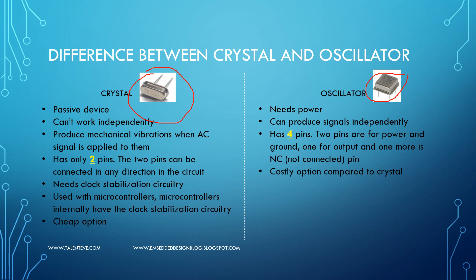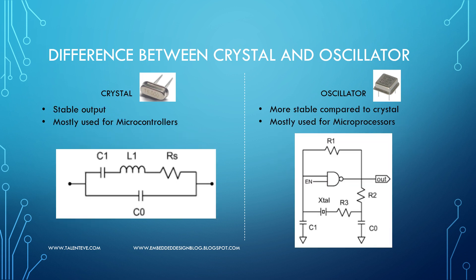Crystal is mostly used with microcontrollers and is a very cheap option, whereas oscillators are mostly used with microprocessors and are costlier than a crystal. If you are using a microcontroller you go with a crystal, though it is also possible to use an oscillator.